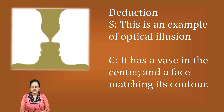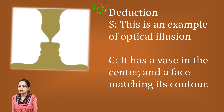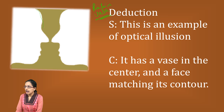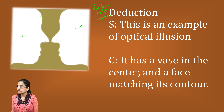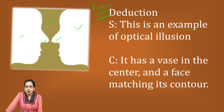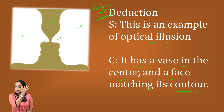Here we have a very interesting aspect — Rubin's vase. Rubin's vase is a classic example of optical illusion. This optical illusion shows what appears to be a flower pot, but if you look closely it has two faces — the white portion shows two faces looking at one another. If I look at the green portion in between, that is the flower vase. If I state this as a statement, I can conclude that it is a vase in the center and the faces match its contours. This is a correct conclusion.